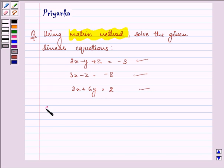Let's proceed with the solution by rewriting the given linear equations. We have 2x minus y plus z equals minus 3. This can be written as 3x plus 0y minus z equals minus 8. And this can be written as 2x plus 6y plus 0z equals 2.